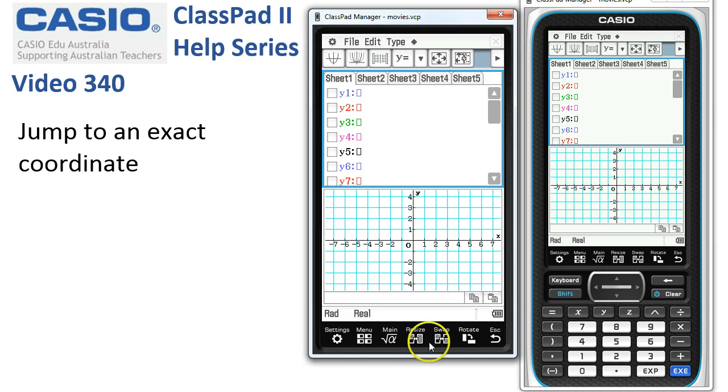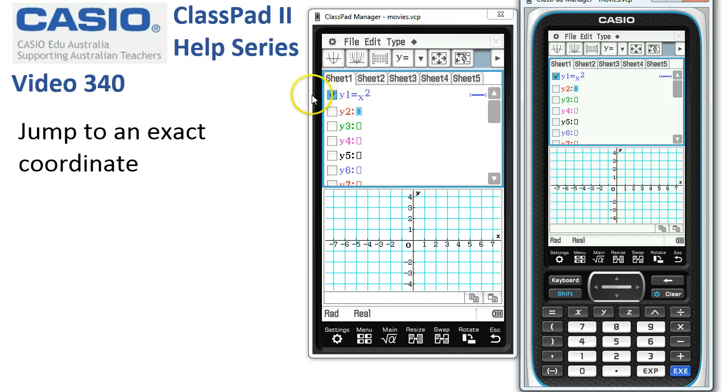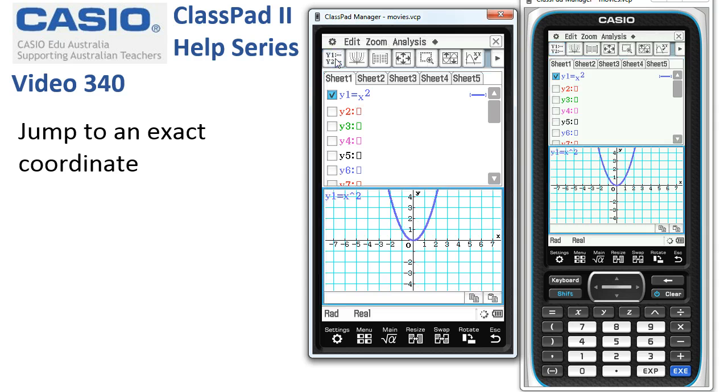We'll type in our function. Here we go: x to the power of 2 for a simple parabola. Tap execute—it's selected. We're ready to begin, and then we tap onto our draw graph icon.